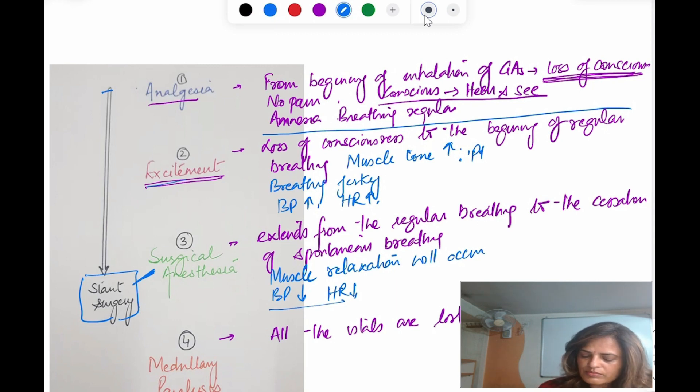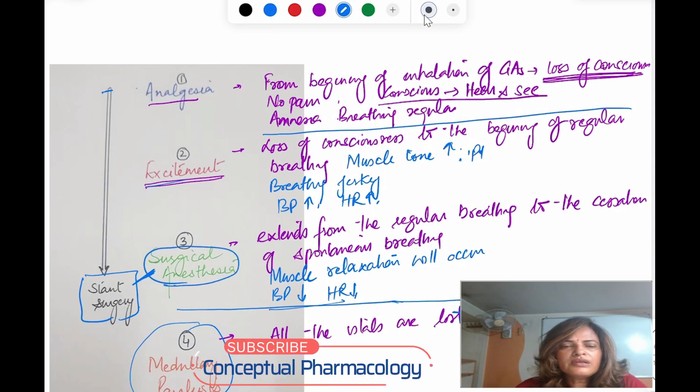But if per chance the patient goes to the fourth stage, stage of medullary paralysis where all the vitals are lost, you have to revive the patient. Otherwise you may lose your patient and the patient may die. These are the four stages of anesthesia. Clear cut stages are seen with ether. But in modern day practice all these clear cut stages are not seen. In modern day practice we just see light anesthesia versus deep anesthesia. Most important is if you are giving incision, the patient is immobile and has no pain. That means the patient is in surgical anesthesia.